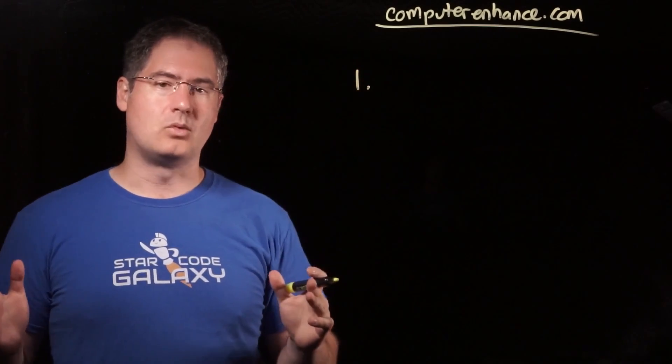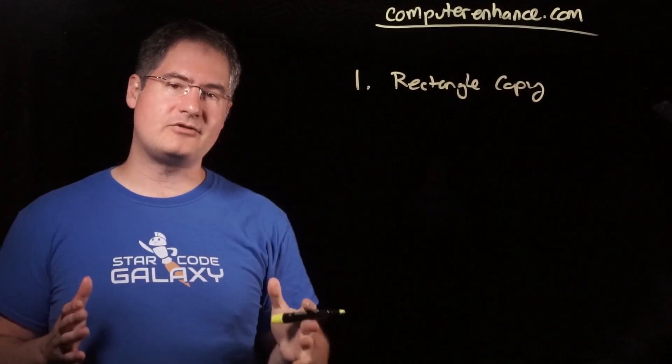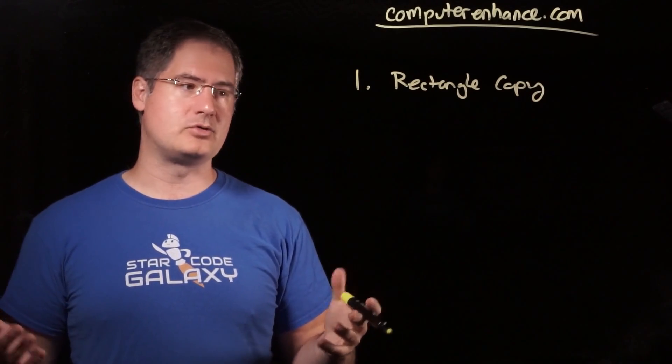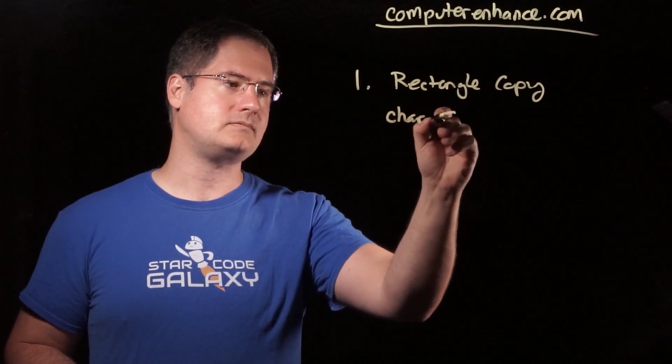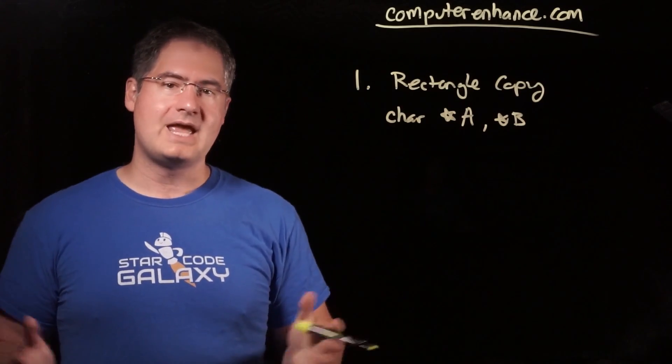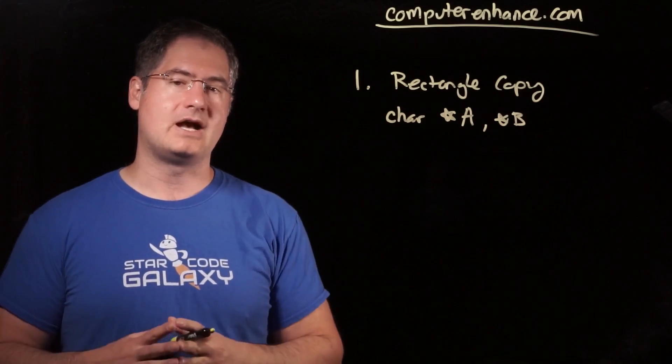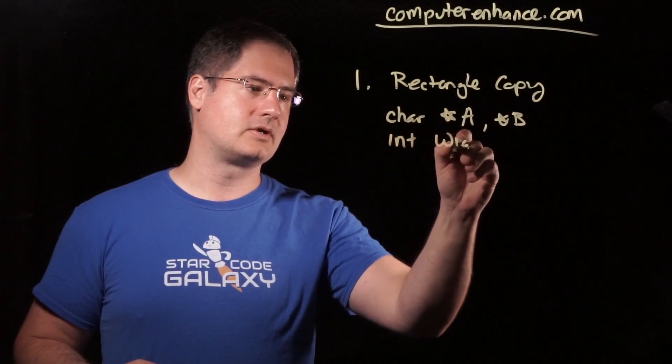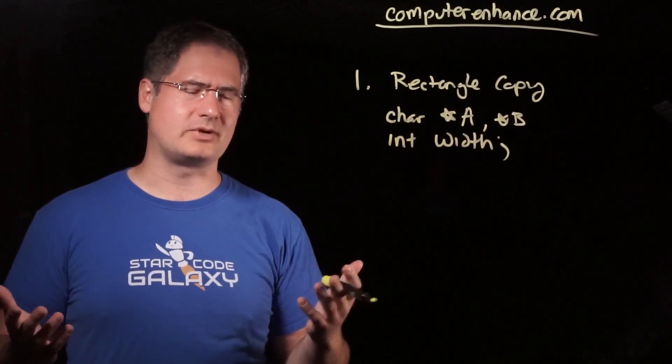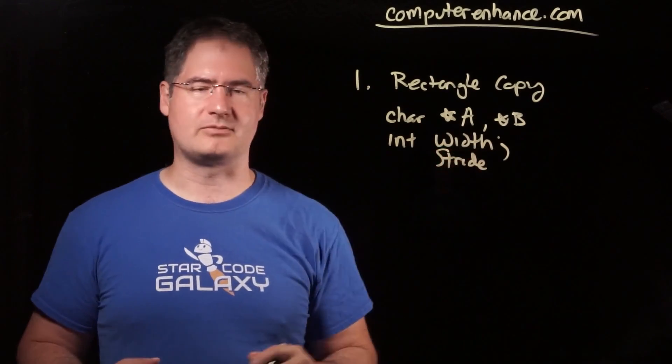So question number one was a rectangle copy. The definition of this question is if you are given two pointers to two different buffers, so you can imagine something like a char star A, star B, where you have two pointers to two different buffers, and you have some information about these buffers. For example, you have like a width of the buffer, at the very least, and presumably a height. So you have something like int width for this buffer, and I think they're the same. So you have either a width or it might have been a stride, and I don't know which of the two because my memory is kind of hazy.